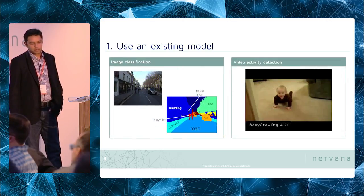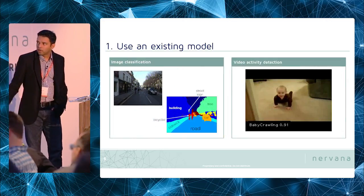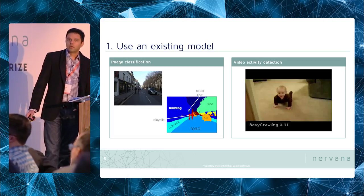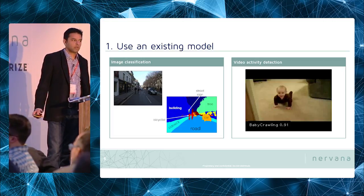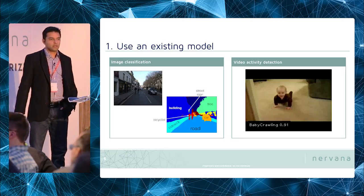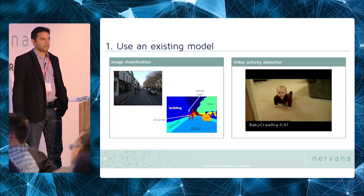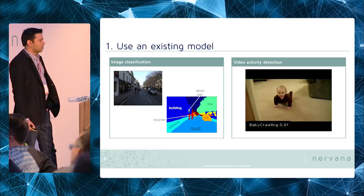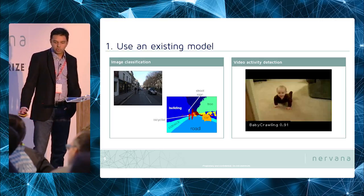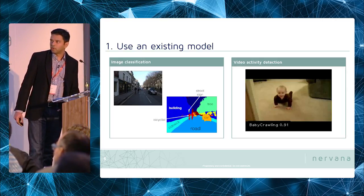Here are a couple of examples of some of these models. On the left is an image segmentation model that's commonly used for autonomous driving applications. On the right is a video activity recognition model originally from Facebook that can detect one of a hundred different categories of actions — and it can get pretty specific, as you can make out.